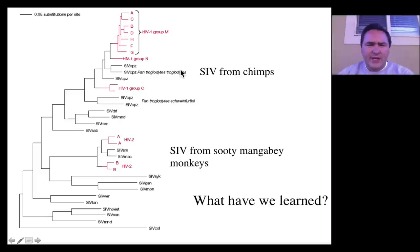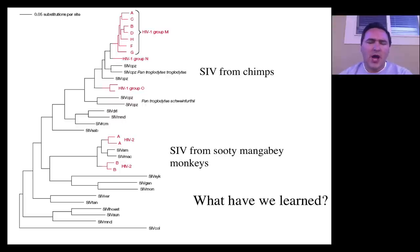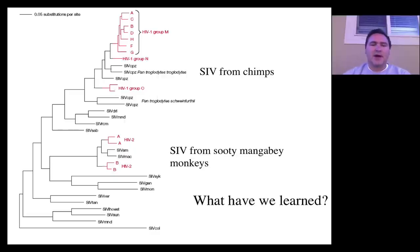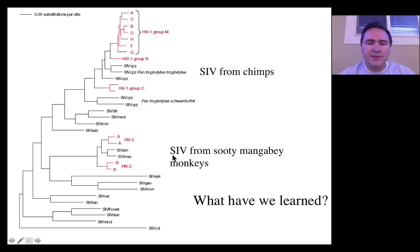So here this phylogenetic tree is showing us the relationships of HIV to other forms of viruses. It turns out that the HIV virus is most closely related to SIV, the simian virus. And as you can see, the HIV-1 group is related to a bunch of chimpanzees, whereas the HIV-2 virus is most closely related to the sudi-mangabi monkeys.